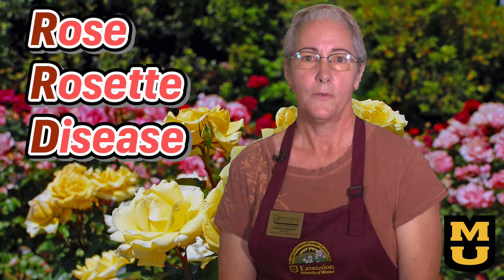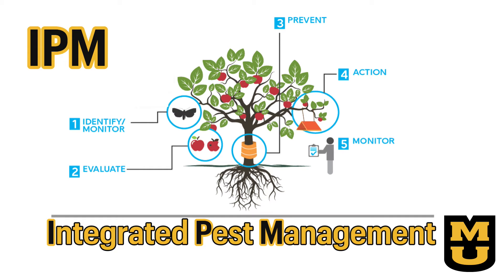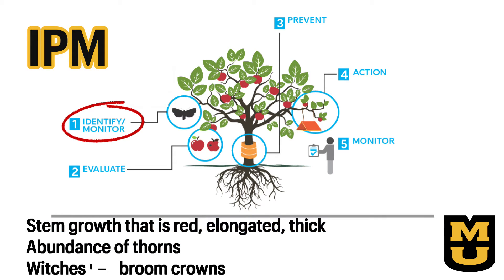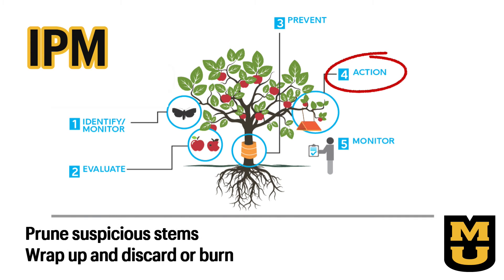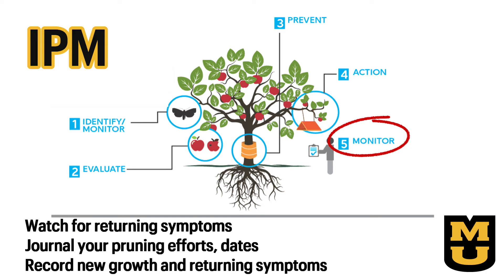The virus will be in the roots, so clean up the debris and trash the entire plant. If there is any good news, rose rosette disease only infects roses and it does not remain in the soil, so immediately replanting with another rose will be fine. An integrated pest management, or IPM, strategy is a multi-step approach to managing rose rosette disease. Monitor your roses daily, looking for the symptoms we've discussed. Take action by pruning and discarding any suspicious stems. Watch for returning symptoms. Record your actions so you can confirm if symptoms return.